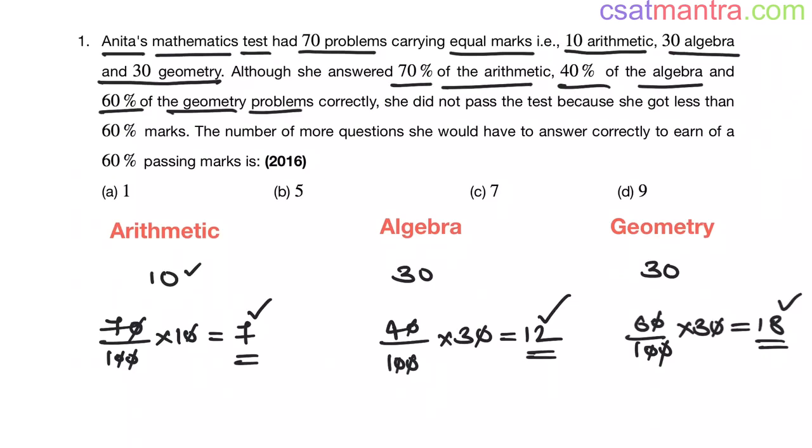So in total, how many problems she answered correctly? That is equal to 7 plus 12 plus 18. 12 plus 18 is 30. 30 plus 7 is 37. 37 questions out of 70 questions she answered correctly, my friends.